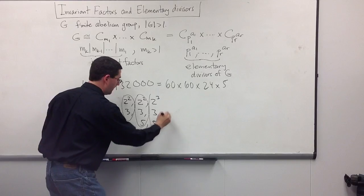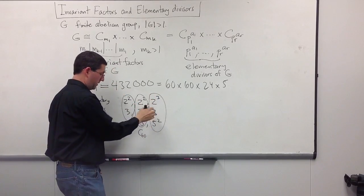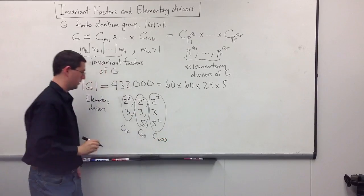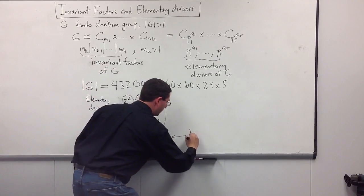And, the last one is going to be, well, let's see, there's going to be 100 times 6 would be 600. So, these down here will be my invariant factors.